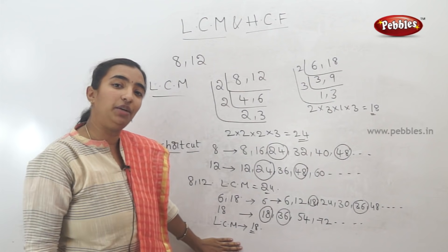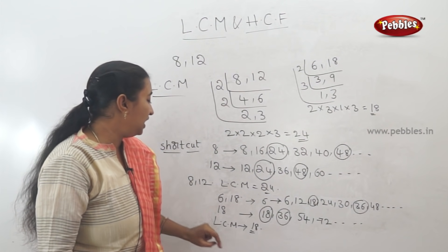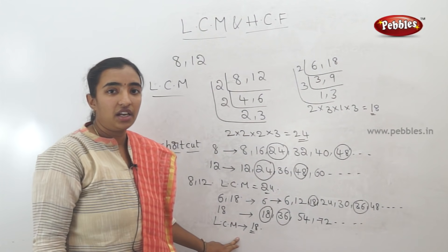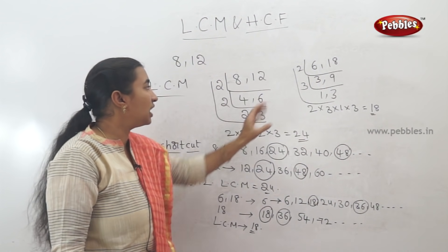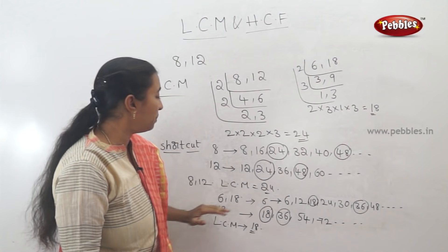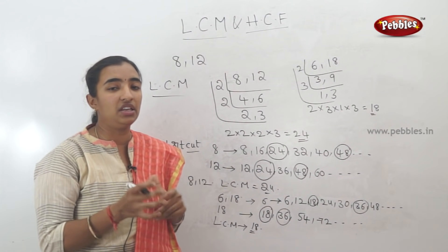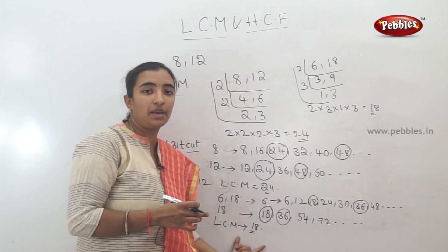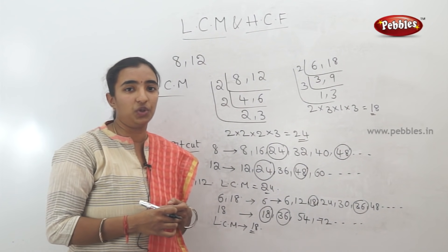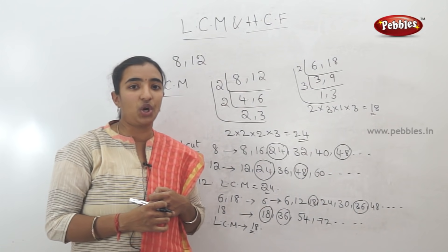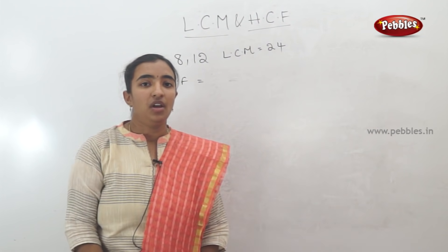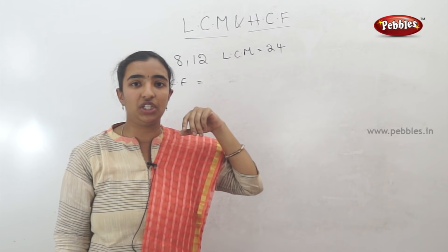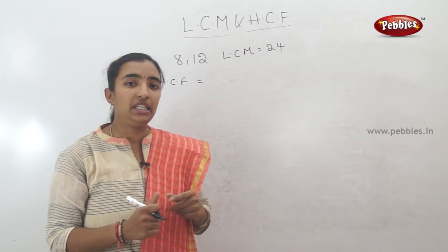So the shortcut method confirms: LCM of 6 and 18 is 18. Using the shortcut in the easy method, we can find the least common multiple quickly — useful for exams. Now let's find out HCF using the common method.